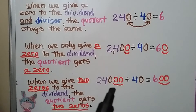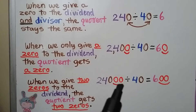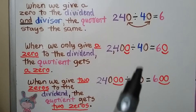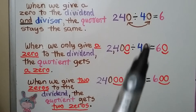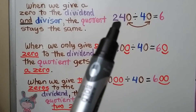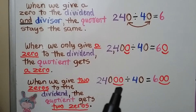When we give two zeros to the dividend while keeping the divisor at 40, the quotient will get two zeros — there are two more zeros in the dividend than in the divisor's basic fact portion. Now our quotient is 600.